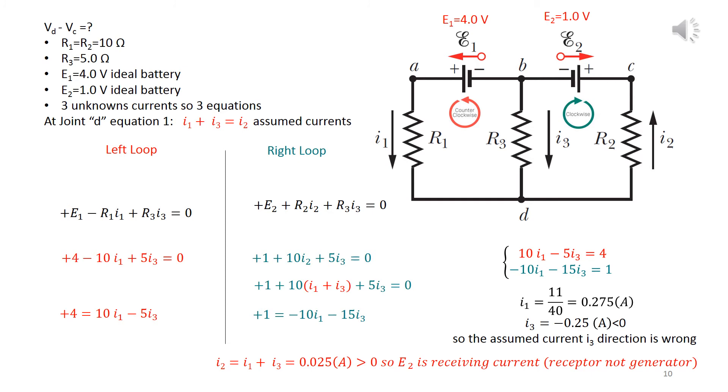After you apply your left loop or right loop, try to do it on your own. And then you say, at a certain joint I1 and I3 without I2, middle joint D, I1 plus I3 equals I2. Three equations, three unknowns. But suddenly, I3 is minus 0.25 A, which is negative.